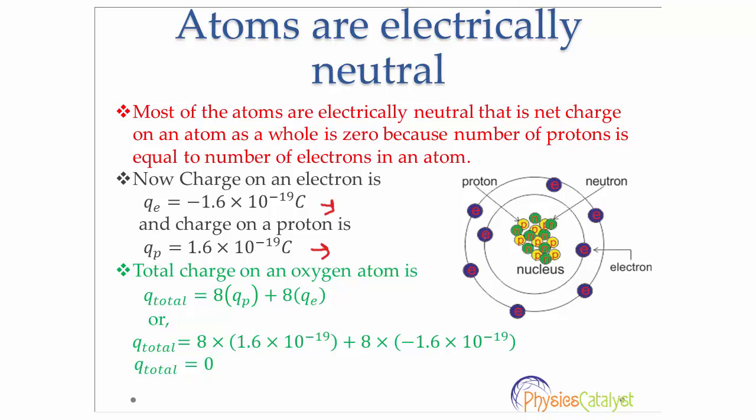Let us consider an atom of an element, say oxygen. An oxygen atom has atomic number 8, so an oxygen atom has 8 electrons, 8 protons, and 8 neutrons. If you add up all the charge of this oxygen atom, the total charge equals 8 times the charge on a single proton plus 8 times the charge on a single electron. That is, 8 × 1.6 × 10^-19 plus 8 × (-1.6 × 10^-19), which equals 0. All the charge on the oxygen atom cancels out, and the net charge comes out to be 0.